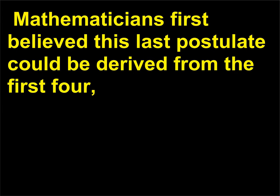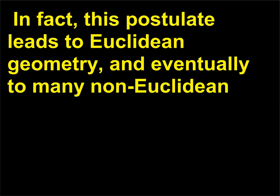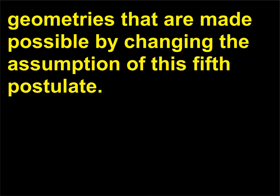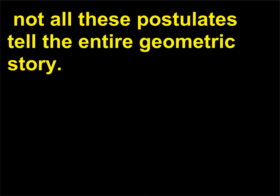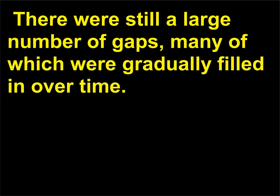Mathematicians first believed this last postulate could be derived from the first four, but they now consider it to be independent of the others. In fact, this postulate leads to Euclidean geometry, and eventually to many non-Euclidean geometries that are made possible by changing the assumption of this fifth postulate. Like many early attempts at explaining mathematics, not all these postulates tell the entire geometric story; there were still a large number of gaps, many of which were gradually filled in over time.